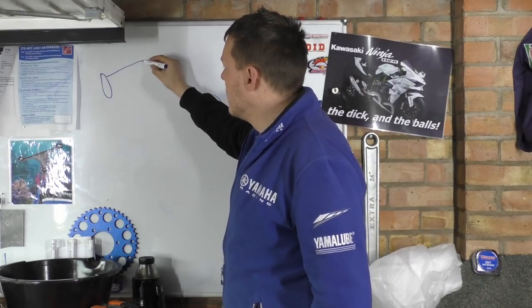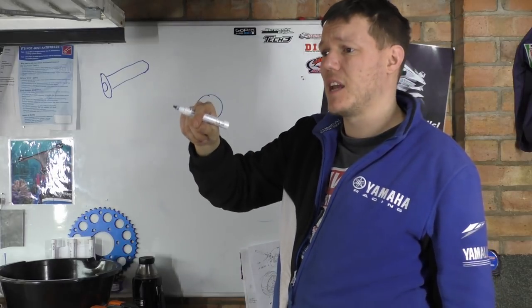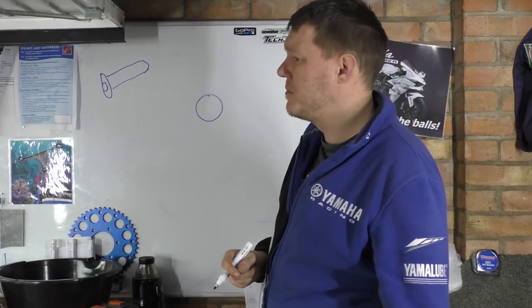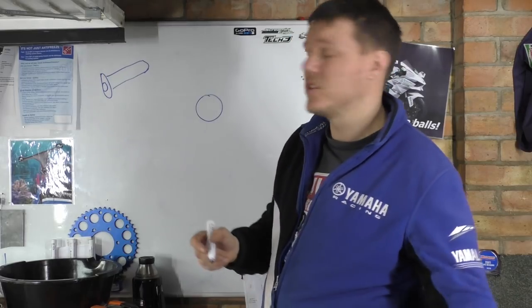But you'll have a throttle like so, and basically that has a - what do you call them now - the crimp thing on the end. I've lost it.